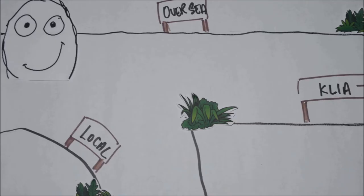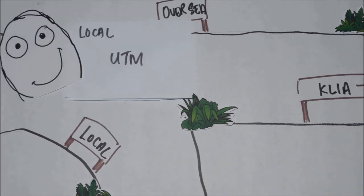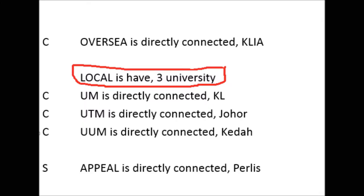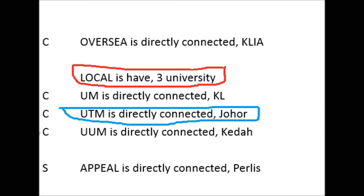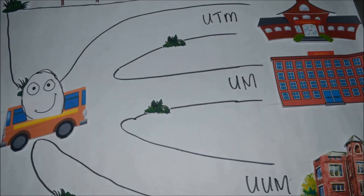The second student opened the offer letter and realised he got an offer from a local university, UTM. He found the best match address in the routing table, but the route is not an ultimate route — it's a parent route. The parent route cannot make a decision on its own. Since there are many local universities, we need to look at the subnets of the parent route, which are the child routes. There are UTM, UM, and UUM as child routes in the routing table. The second student's destination is UTM, so from the routing table we know the exit interface is CHOHO, and the student exits from there by bus.